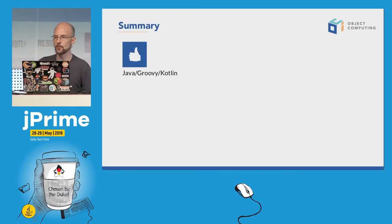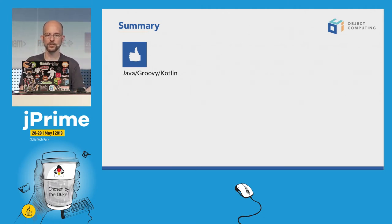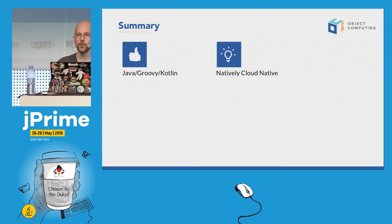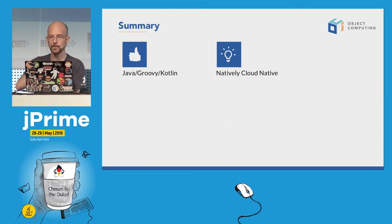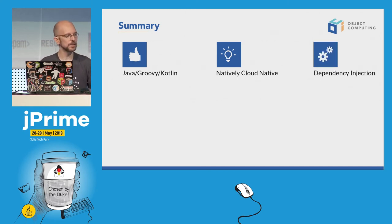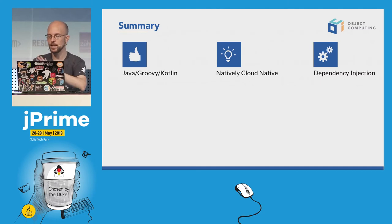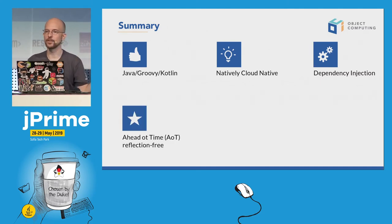As a summary: Micronaut is a framework for creating microservices with Java, Groovy, and Kotlin. For Java and Kotlin we use annotation processors to create meta-information at compile time; for Groovy, AST transformations. Micronaut is natively cloud native — I showed service discovery with Consul, distributed tracing, and GraalVM support. We use the same dependency injection model we love from Spring, but we do everything ahead of time — without reflection, without runtime proxies. One benefit of no runtime proxies is that stack traces are much shorter and cleaner than in Spring.